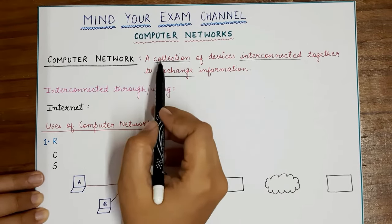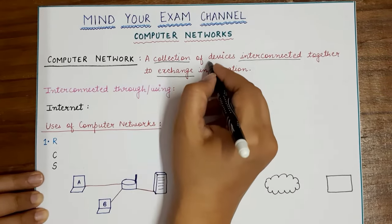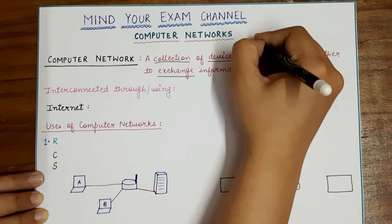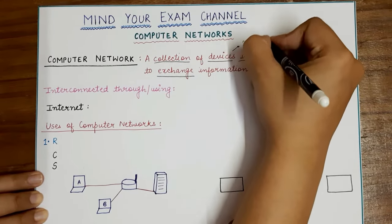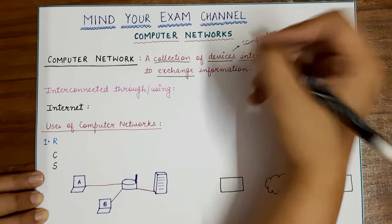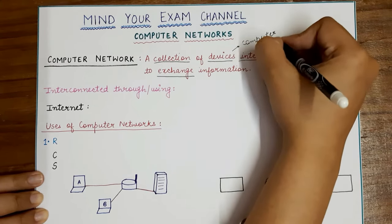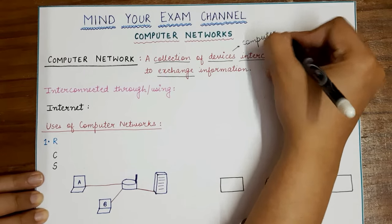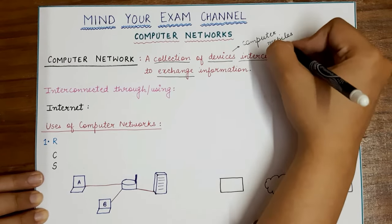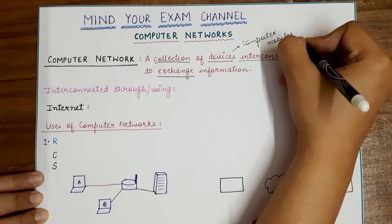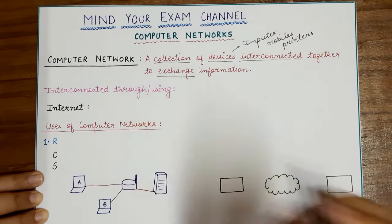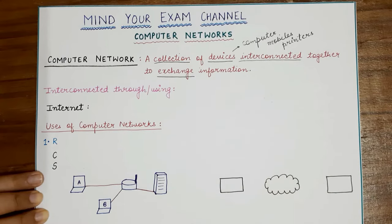Firstly, it is a collection of devices. These devices can either be computers, laptops, printers, mobile phones, or any other digital devices. These devices are connected together so that they can communicate with each other, and via communication they can exchange information with each other.